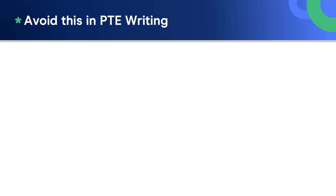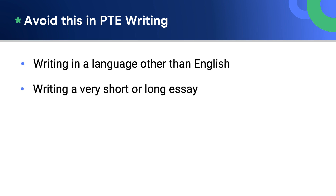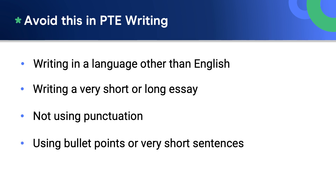You should only use capital letters at the start of a sentence and for proper nouns. Other situations you need to avoid, which will also be scored a zero: writing in a language other than English, writing a very short or very long essay, not using punctuation, using bullet points or very short sentences, and not writing a response.